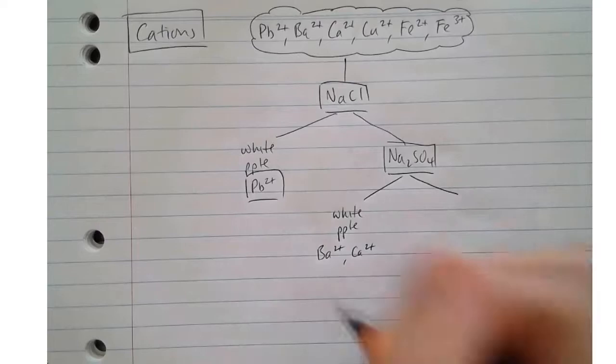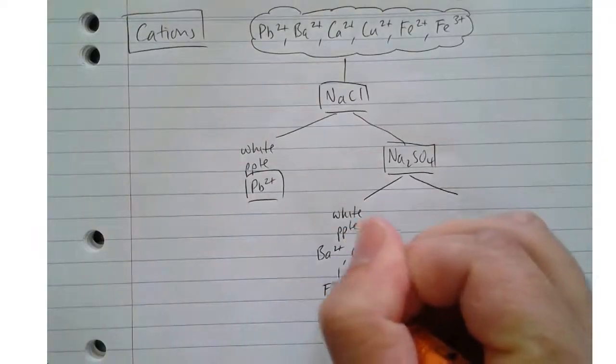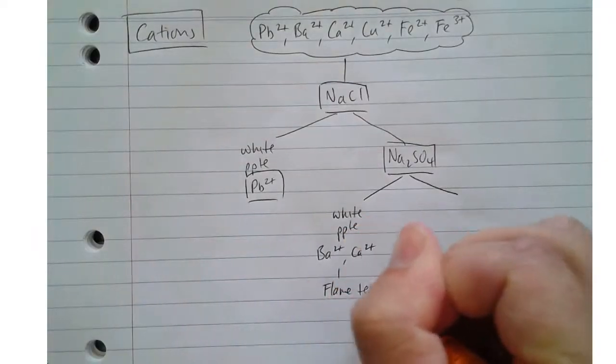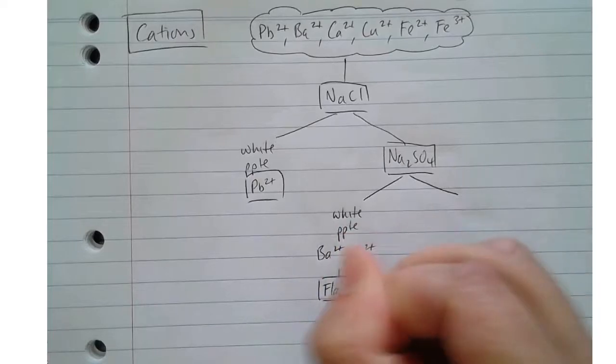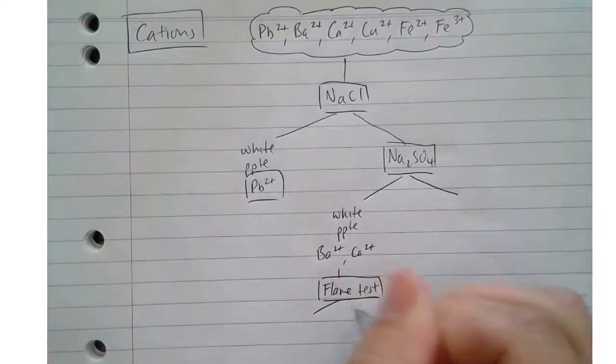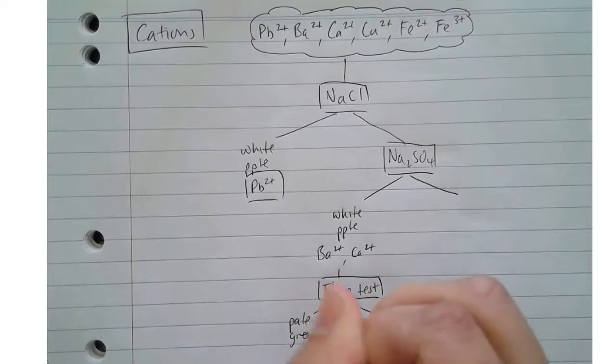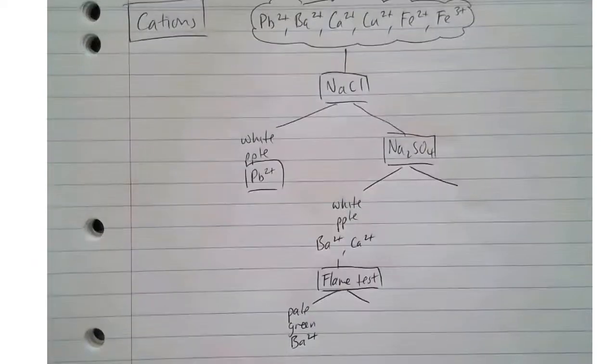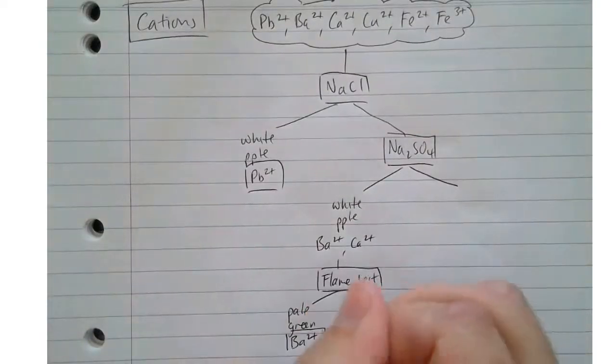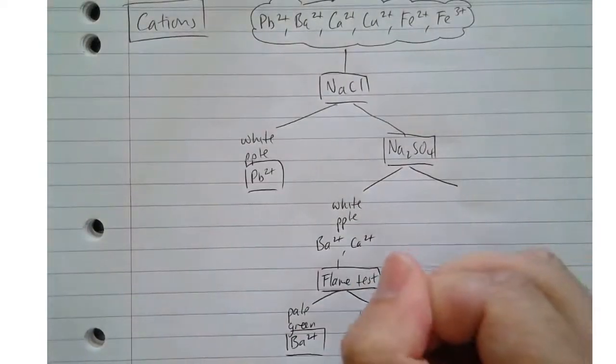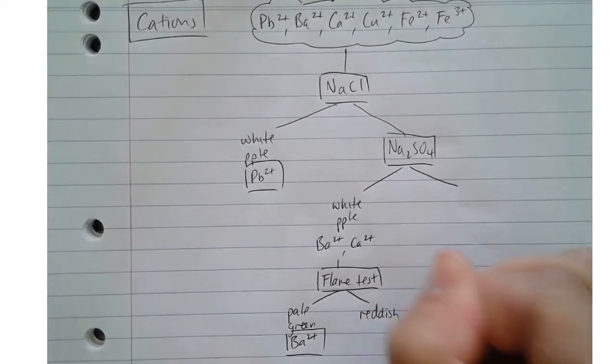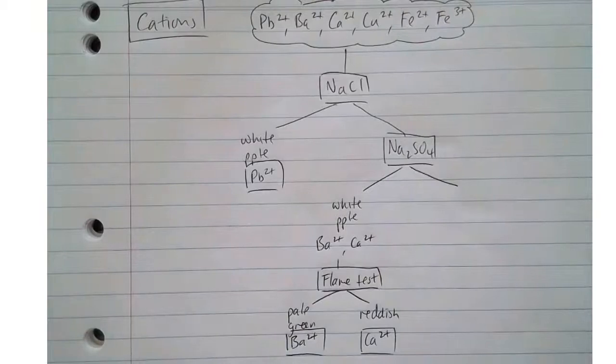So what we can do then to identify barium and calcium is do a flame test. We put samples of them in a flame, and we get pale green is barium, so I'll slide it up just a little bit, and a reddish colour is our calcium. So we can use that to identify.